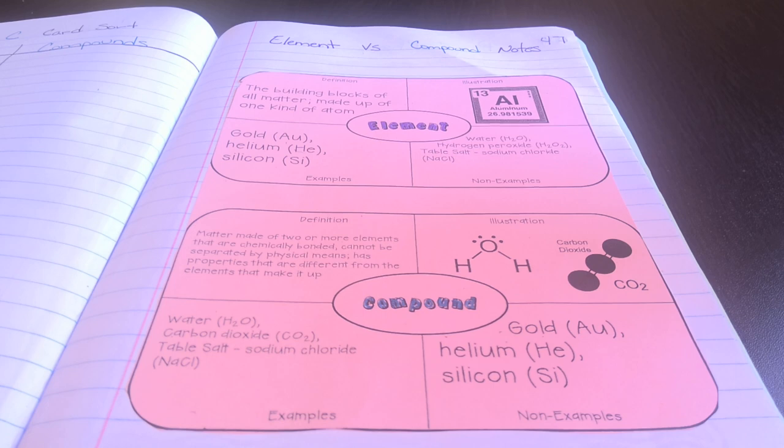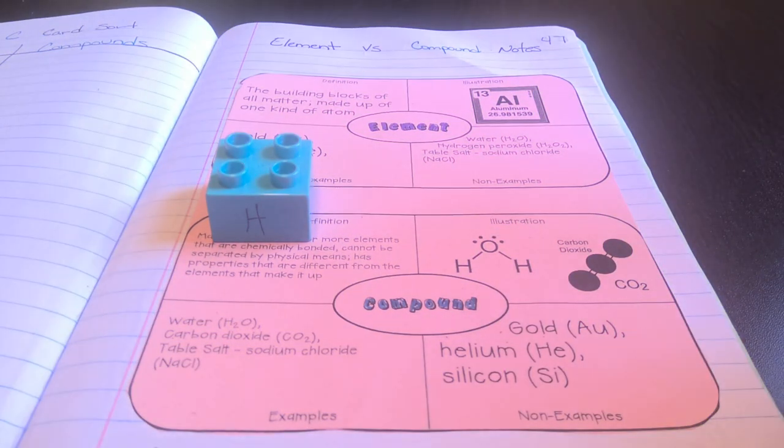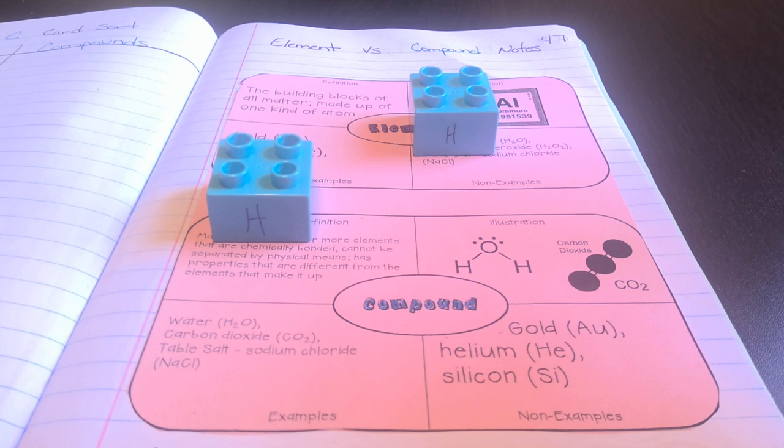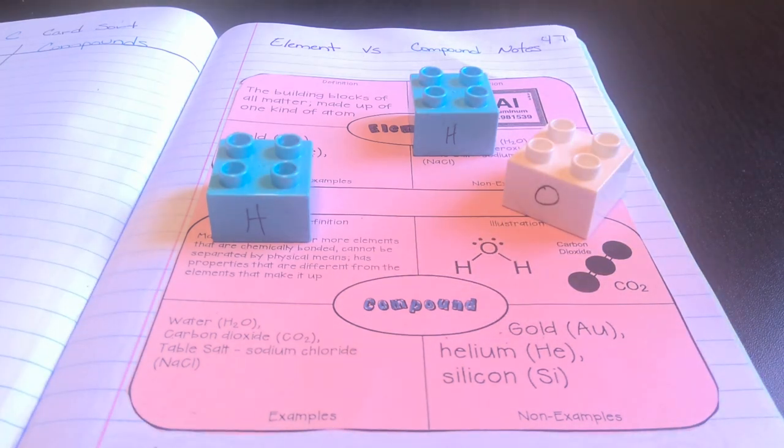Elements are made up of only one kind of atom. Let's look at these Legos. Each color will represent a different element. The blue represents hydrogens and the white represents oxygen.